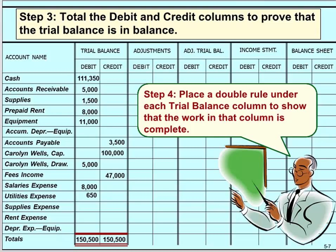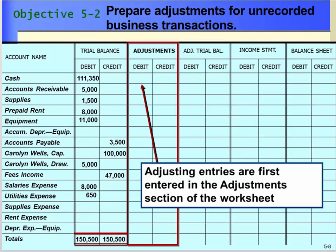To foot a column means to add the numbers in that column. They must balance before moving to the next set of columns. When you ensure that the debits equal the credits, you are ready to complete step four, which is to place a double rule underlined under the Trial Balance columns to show that the work in the columns is complete.